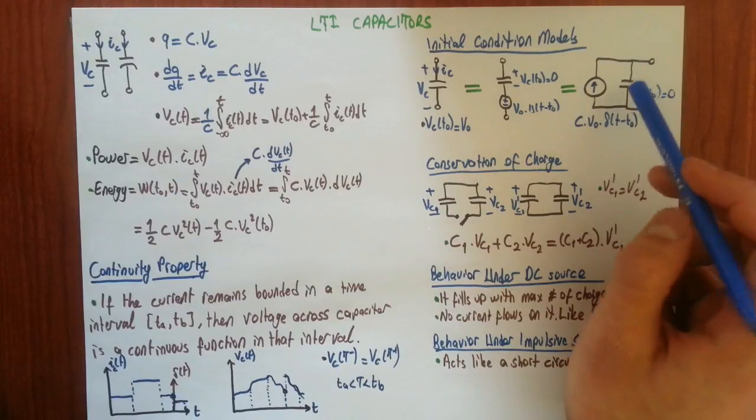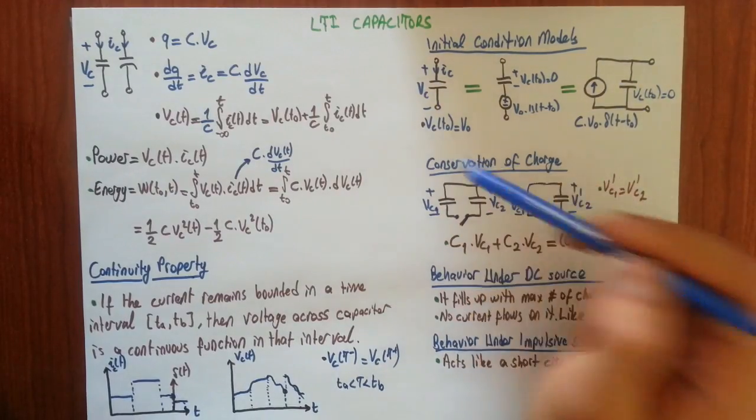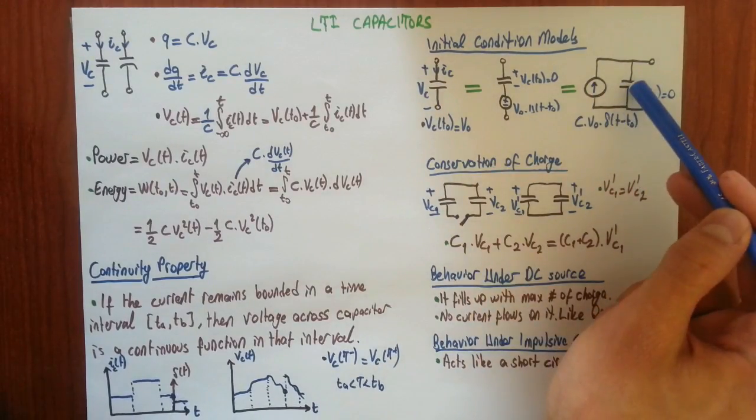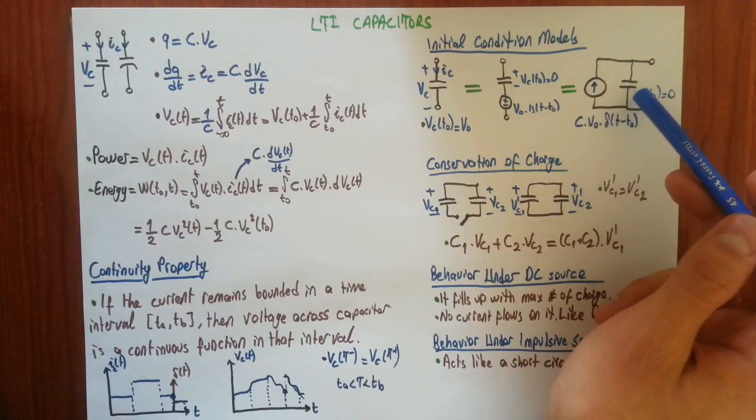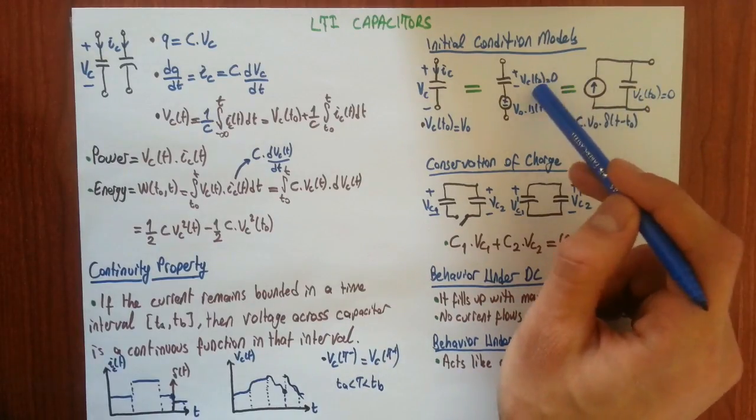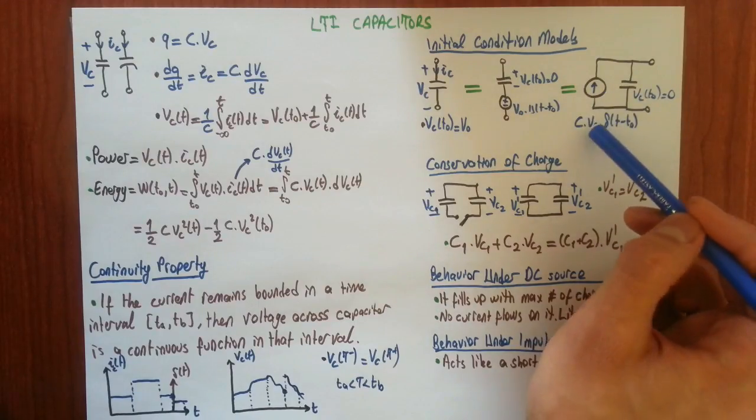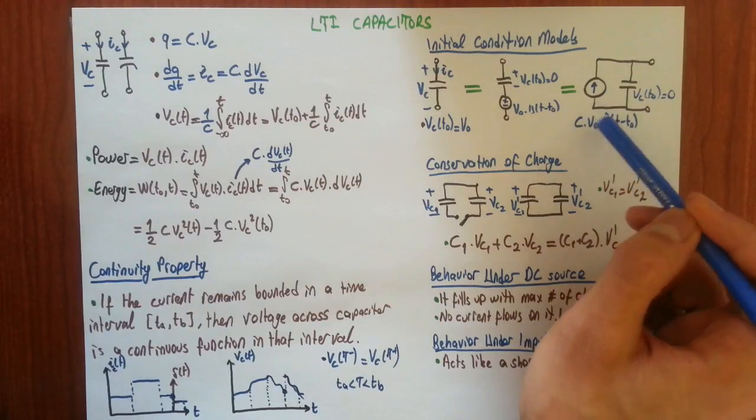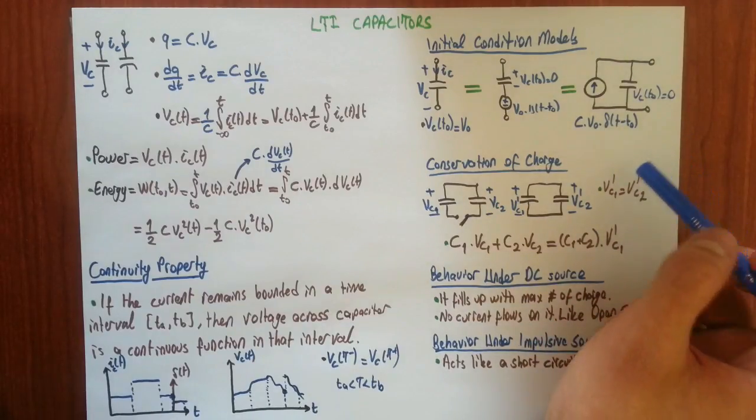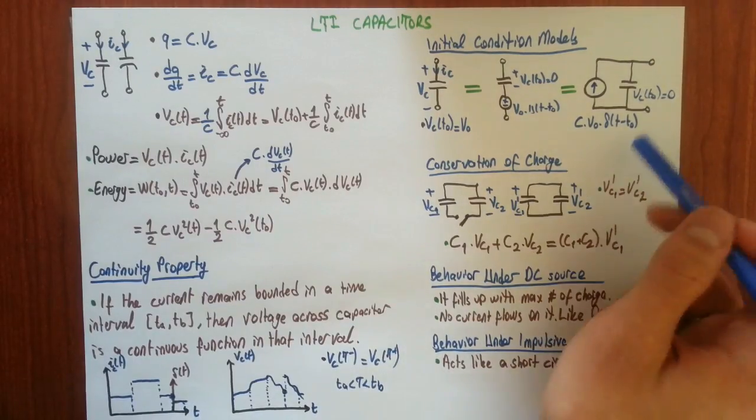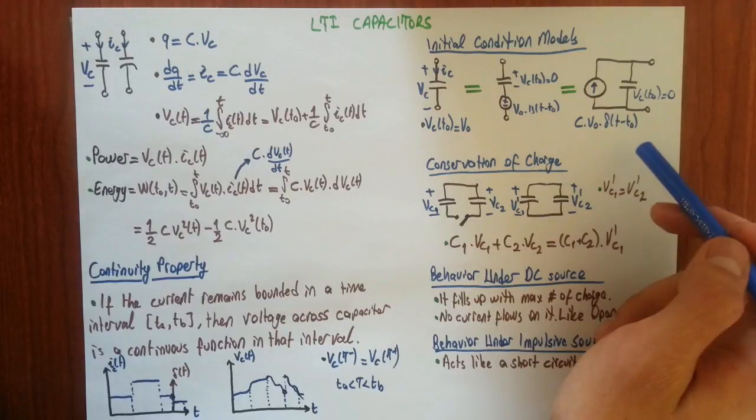Another model is replacing this one with a current source and a capacitor. Your capacitor at this time has zero initial voltage. And your current will supply C times V0 times this capacitance, V0 times a delta. Remember, delta sources are unbounded sources.